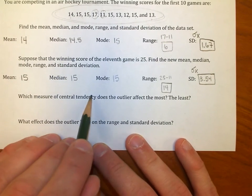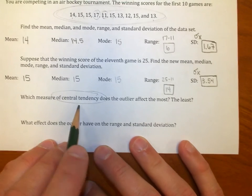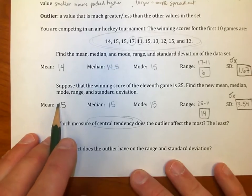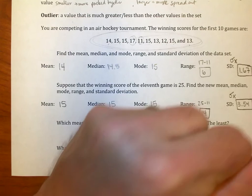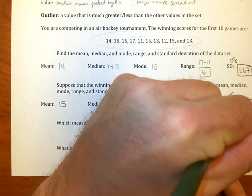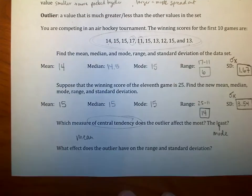So which measure of central tendency, that means mean, median mode, does the outlier affect the most, it looks like it affects the mean in this case. The mean. The one that affects the least, though, is the mode. In fact, it had no effect on the mode, did it? That's because the mode is just however many, I mean, which one occurs most?